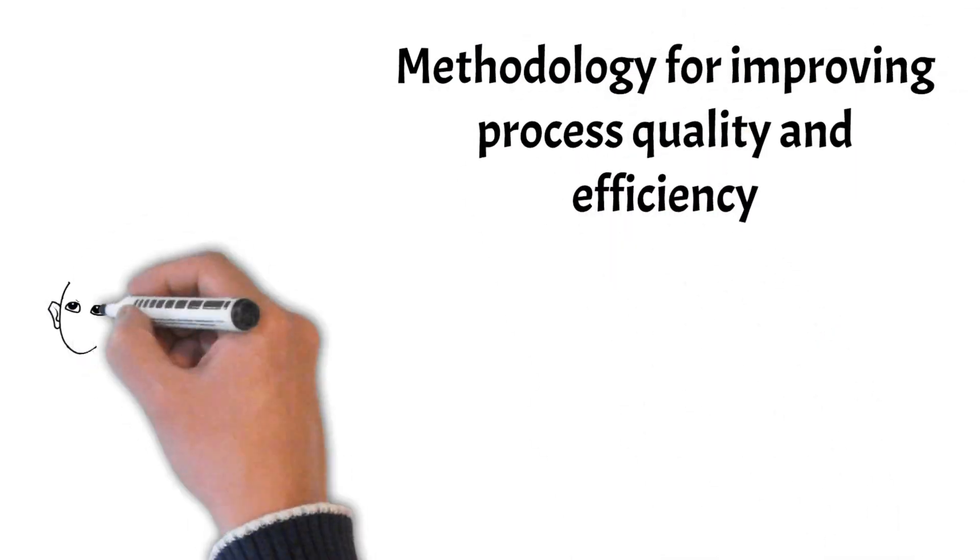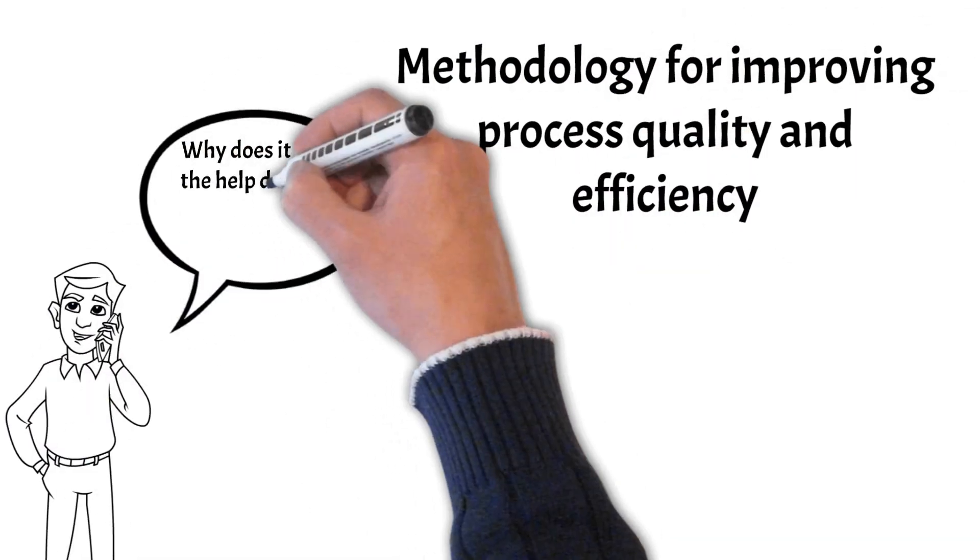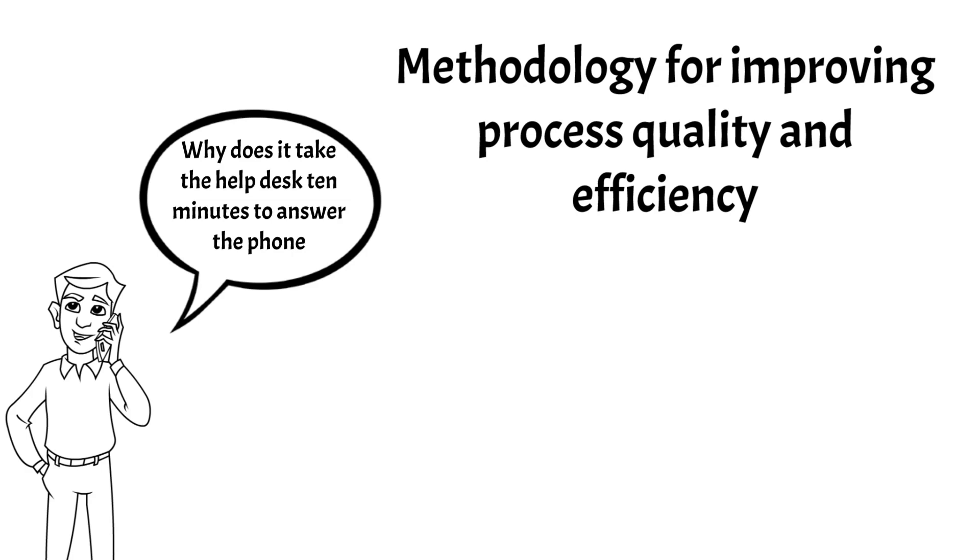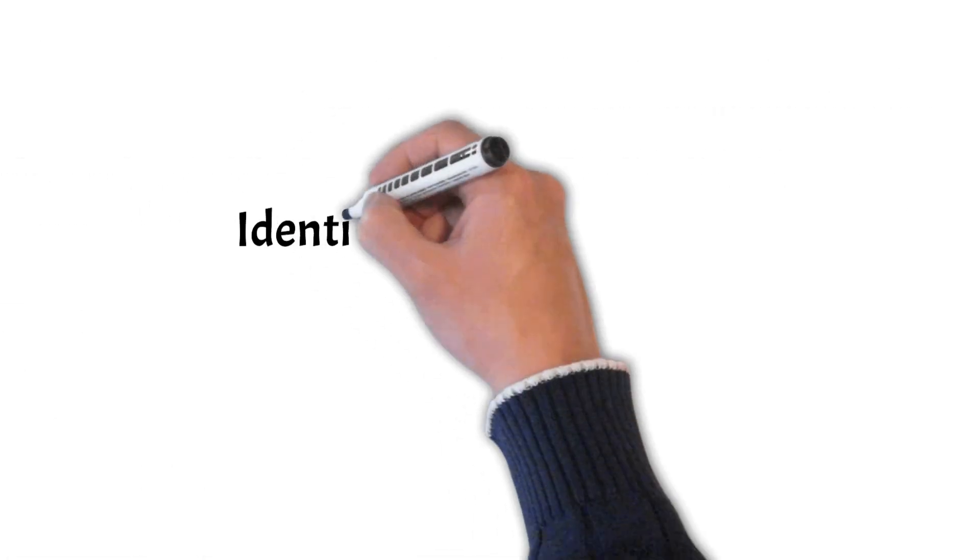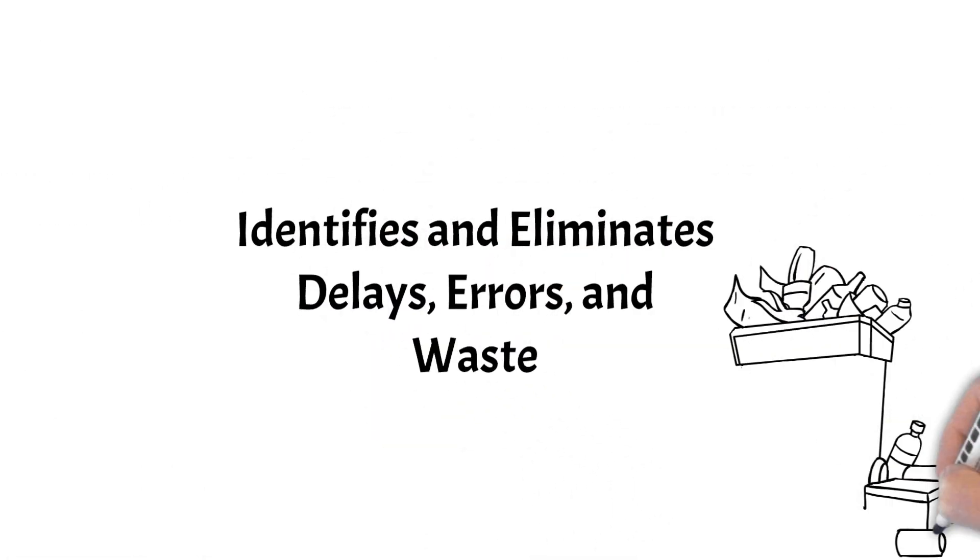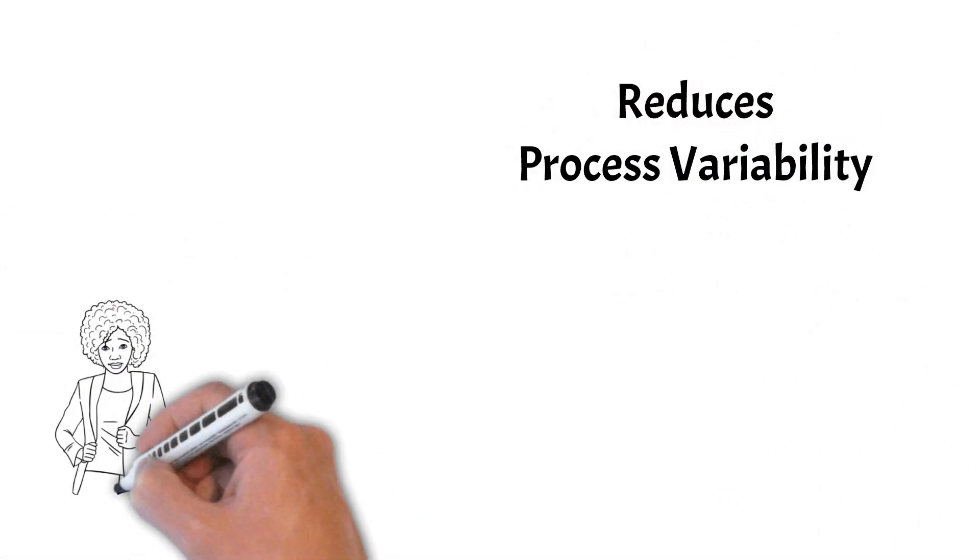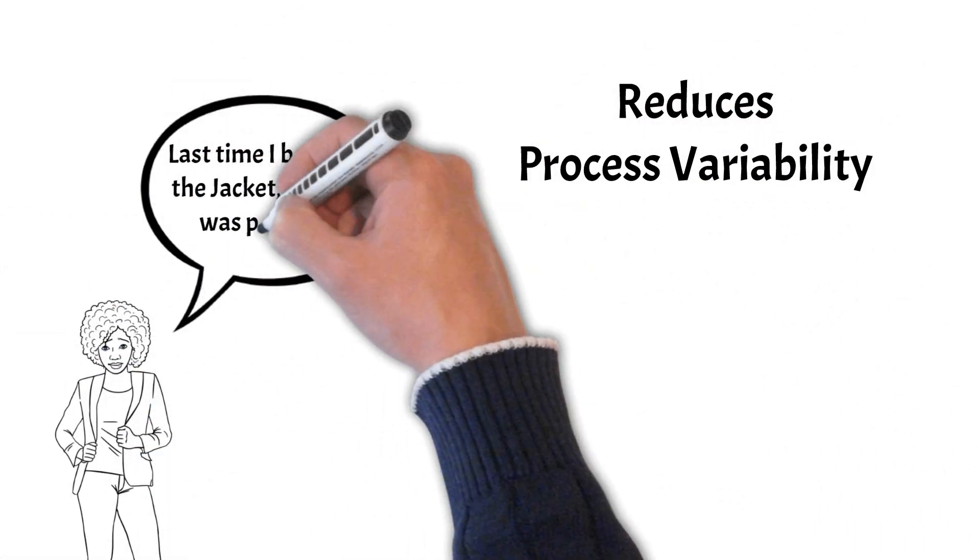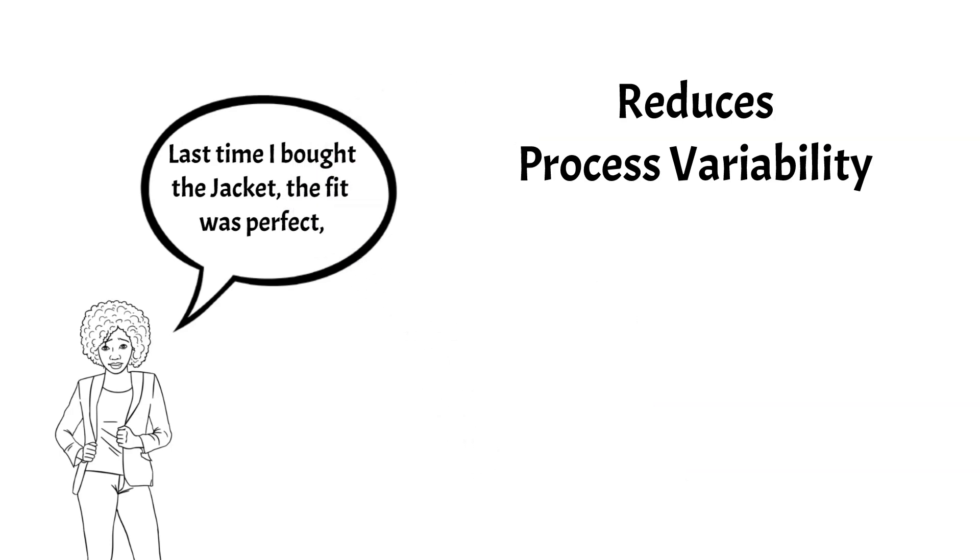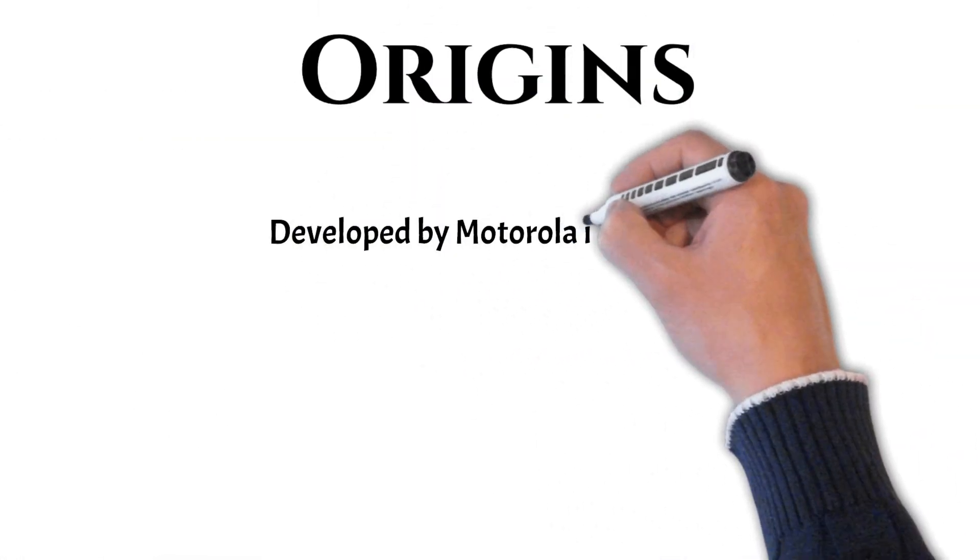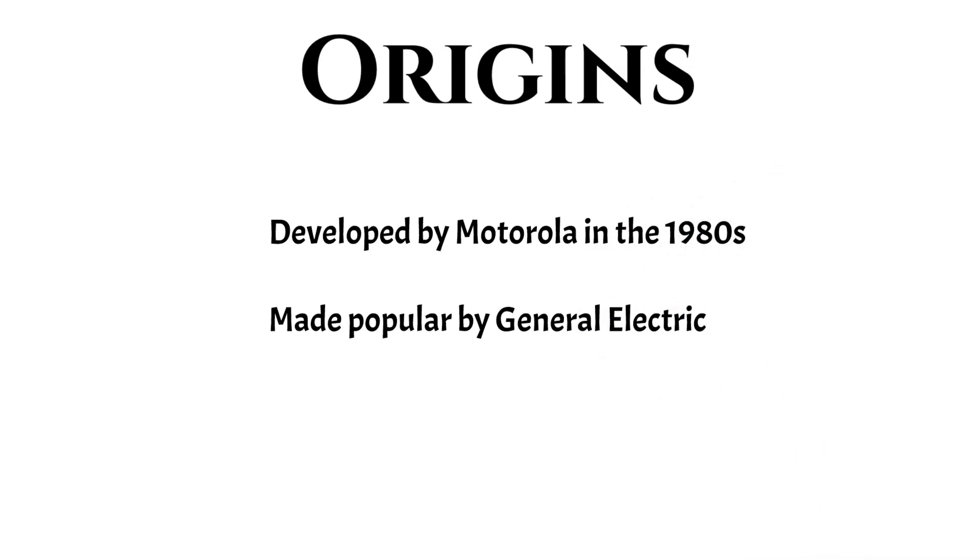Six Sigma is a methodology for improving process quality and efficiency. It does this by first identifying and eliminating delays, errors, and waste, and secondly, by reducing process output variability. It was developed by Motorola in the 1980s and popularized by General Electric.